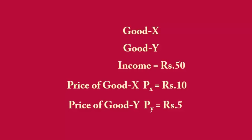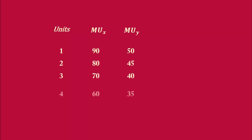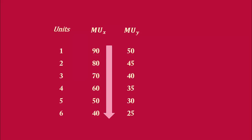Let me first present the utility schedule for Good X and Good Y. As the consumer consumes more and more units of Good X, its marginal utility diminishes. Similarly, the marginal utility of Good Y is also diminishing with additional consumption. This is in accordance with the law of diminishing marginal utility.